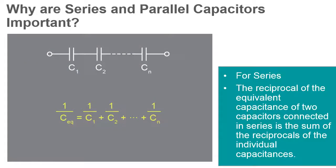For capacitors in series, the rule is: the reciprocal of the equivalent capacitance of two capacitors connected in series is the sum of the reciprocals of the individual capacitances.